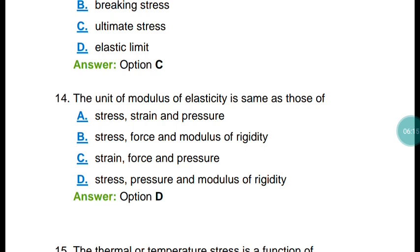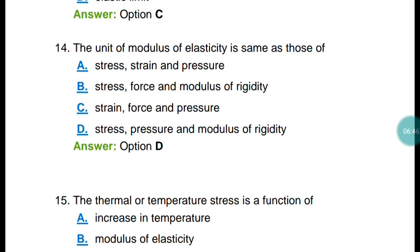Question number fourteen: The unit of modulus of elasticity is the same as those of stress, pressure, and modulus of rigidity. Modulus of elasticity is stress divided by strain, and since strain is dimensionless, the unit is newton per meter squared — equal to the unit of stress, pressure, and modulus of rigidity.